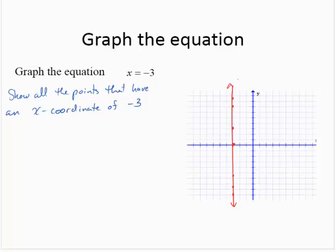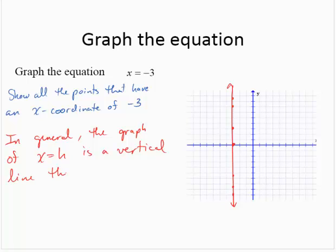There's the line x equals negative 3. In general, the graph of x equals h, where h is some number, is a vertical line. Negative 3 was the specific example here, but the general rule is it passes through (h, 0). So here we had x equals negative 3, giving a vertical line through (−3, 0). In general, if it's x equals h, it's through (h, 0).